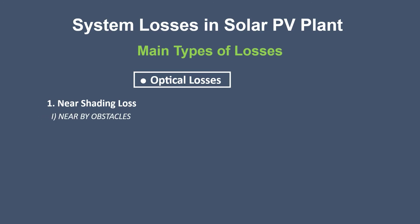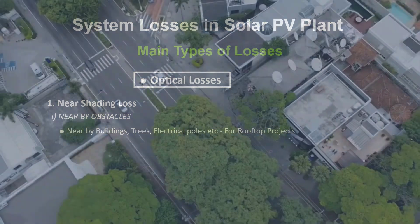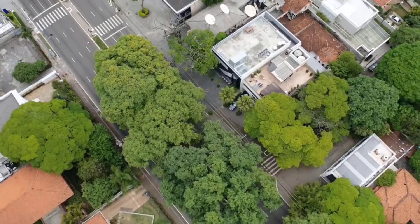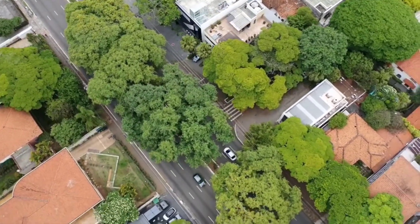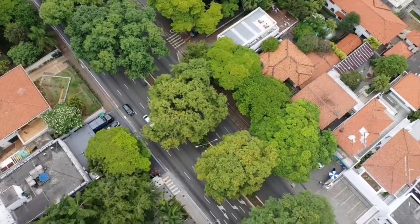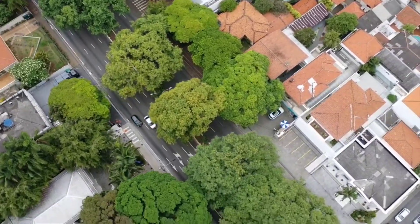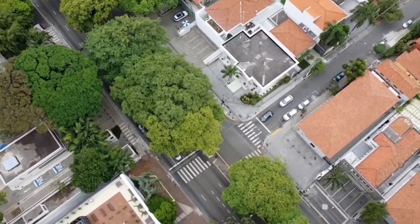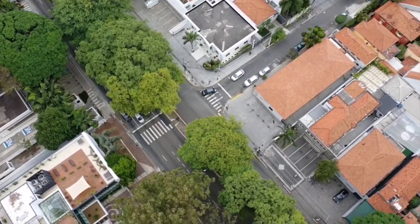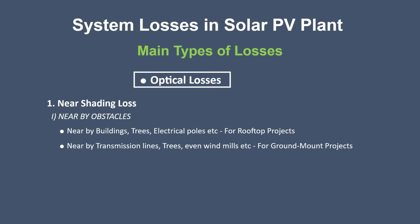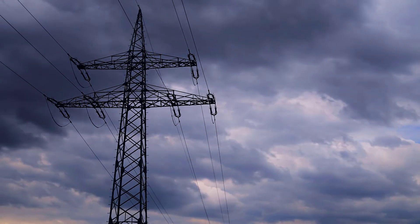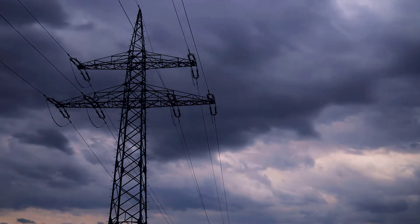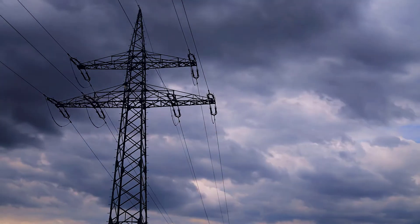First, nearby obstacles like buildings, trees, and overhead electrical lines may create shadows on nearby solar PV installations. Specifically for rooftop installations, service area objects including water tanks, satellite dishes, and air conditioned chillers can cause shading directly on solar panels — and it is advisable to avoid such areas for solar PV installation. For large-scale megawatt solar plants, shadows from transmission lines passing by or within the PV site can also cause shading on PV module surfaces.